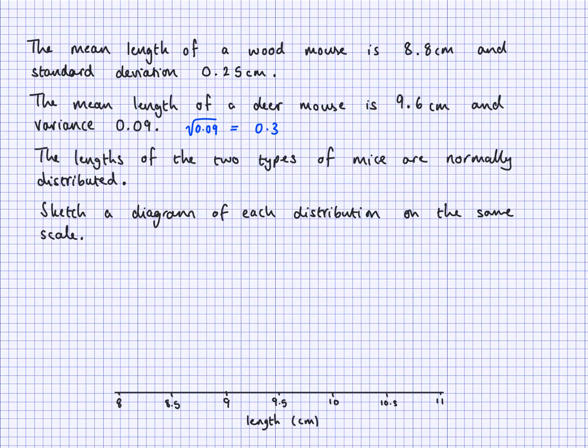Now, it's telling us sketch, but we need to go for a couple of important things. We need to make sure that the top of the bell for the wood mice will be 8.8, so wherever 8.8 is. And also, because I've got two on the same scale, I need to know which one I'm going to be drawing higher, and which one am I going to be drawing flatter.